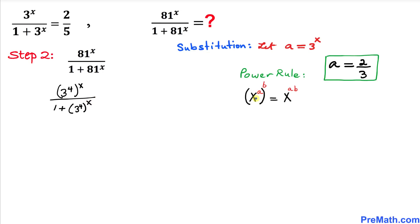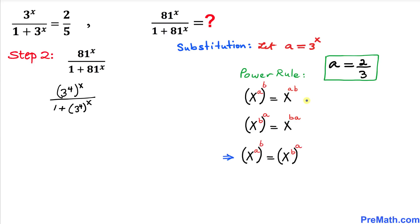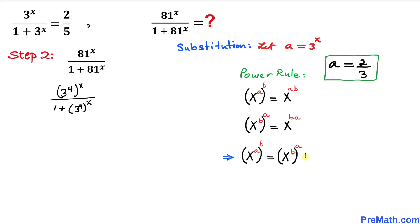Let's recall the power rule of exponents: x^a raised to the power b can be written as x^(a times b). Likewise, x^b raised to the power a equals x^(b times a). Since a times b equals b times a, the results are the same, and we will apply this rule to our problem.